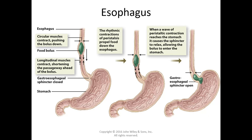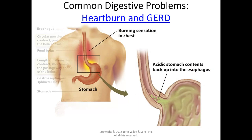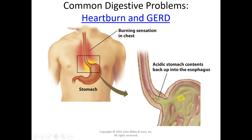The swallow moves the bolus down the esophagus through a muscular movement called peristalsis. At the bottom of the esophagus, at the juncture with the stomach, is the gastroesophageal or lower esophageal sphincter. This sphincter is very important because it prevents backflow of the very acidic stomach contents into the esophagus. The stomach is protected by its coat of mucus, but the esophagus is not — this acid causes pain and can damage the esophageal walls, causing scarring and a precancerous condition in some.